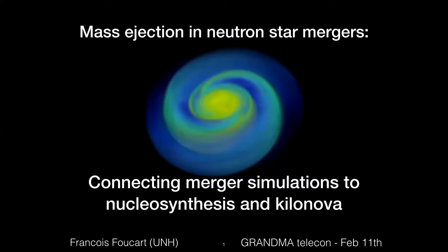Most of what I do research-wise involves the study of compact binary mergers — what happens when two very compact objects like black holes and neutron stars come together and collide in one of the most energetic events that we can observe in the universe today, and certainly the strongest source of gravitational waves that we have been able to observe.